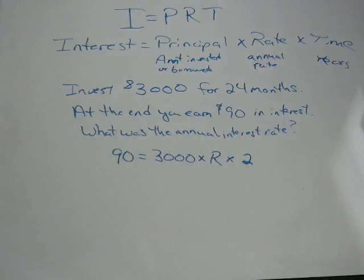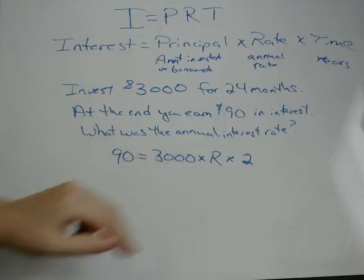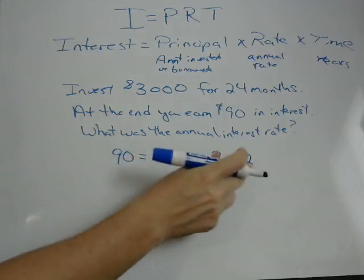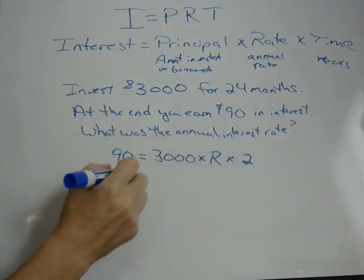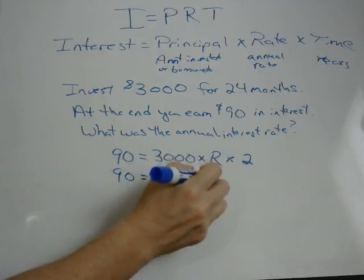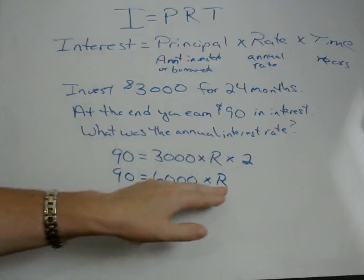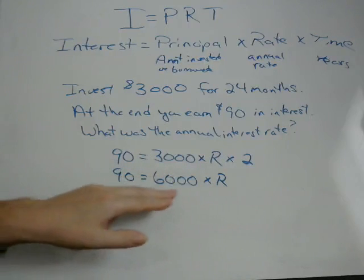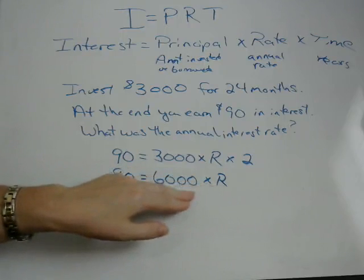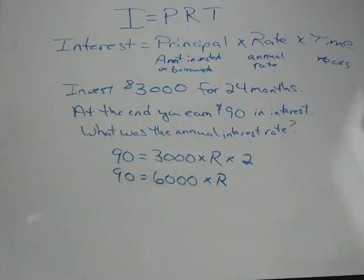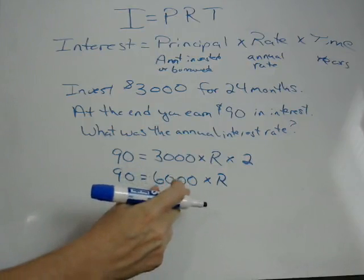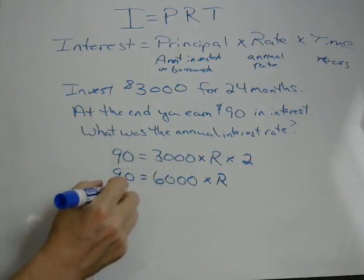Now we have an algebra problem where we're solving for r. We get r on one side and numbers on the other. We can multiply 3,000 times 2 to get 6,000, so we have 90 equals 6,000 times r. To get r by itself, divide both sides by 6,000 — since the opposite of multiplication is division.